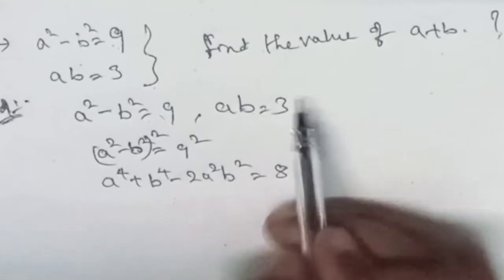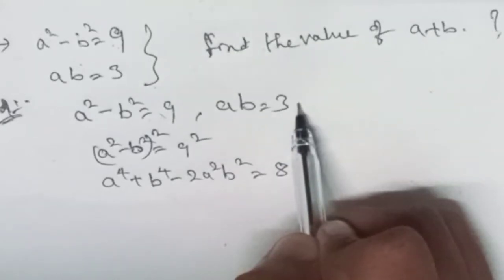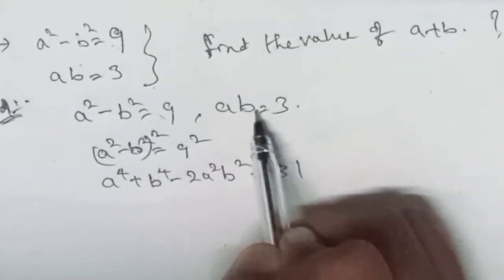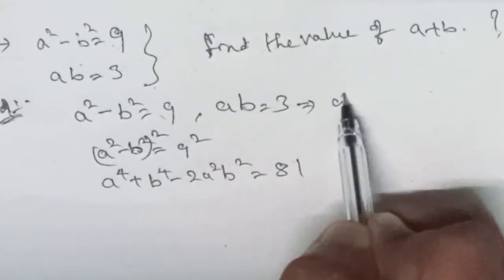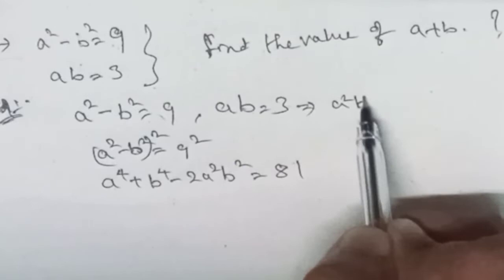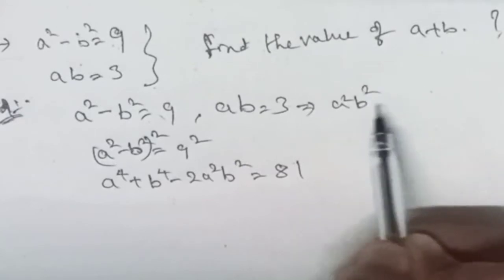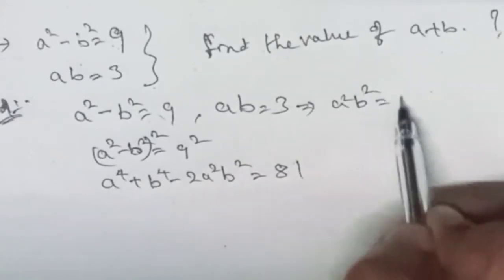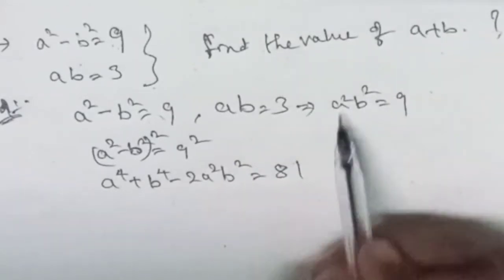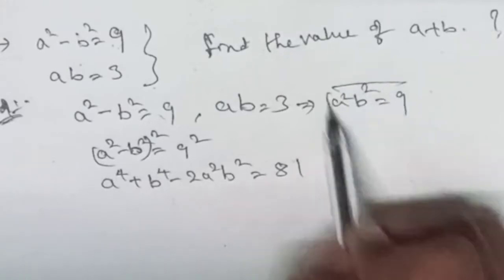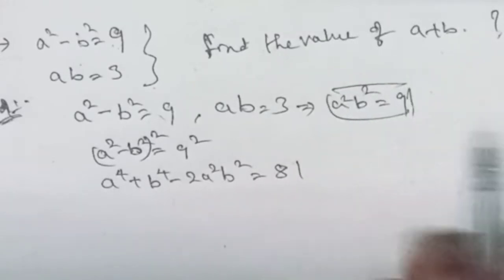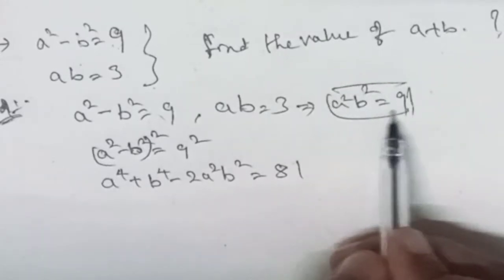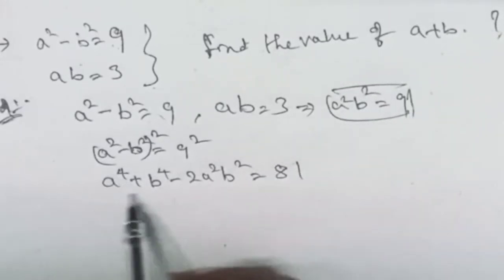We know the value of ab, which implies a squared b squared — that is, squaring ab=3 on both sides — gives us a squared b squared is equal to 9.